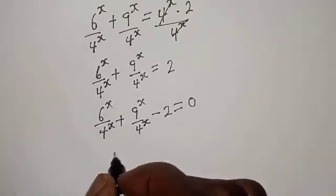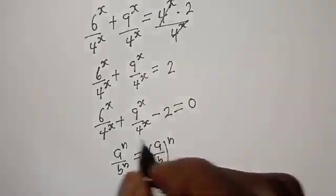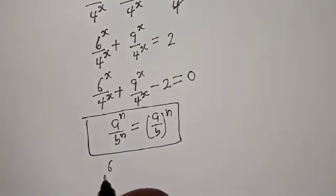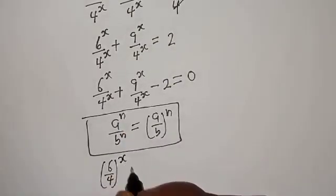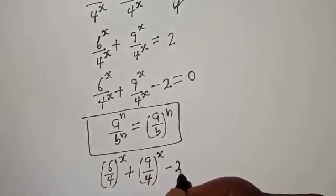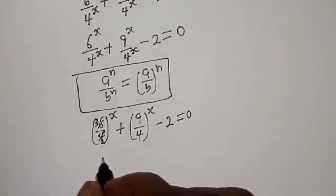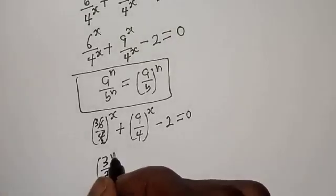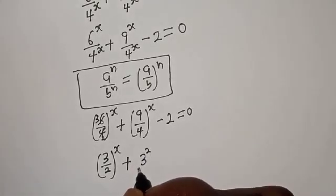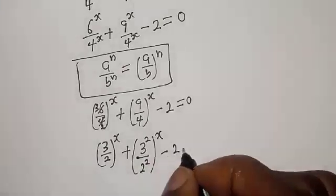We rearrange to get 6 raised to power s over 4 raised to power s plus 9 raised to power s over 4 raised to power s minus 2 is equal to 0. Taking note that a raised to power n over b raised to power n equals a over b to the power of n, we can write this as 3 over 2 raised to power s plus 3 raised to power s over 2 raised to power s minus 2 equals 0.